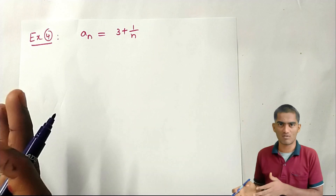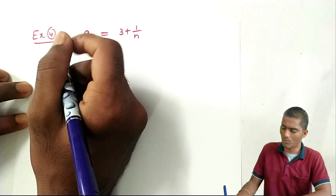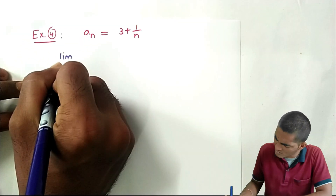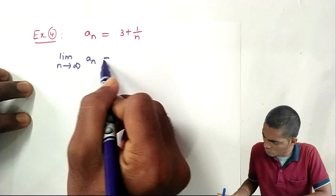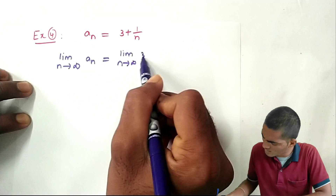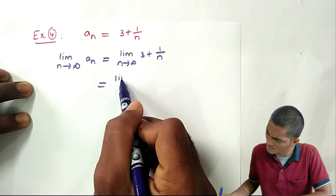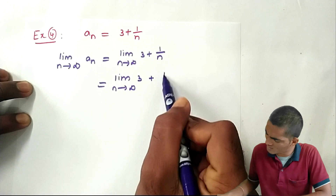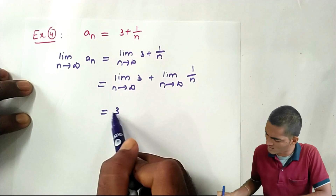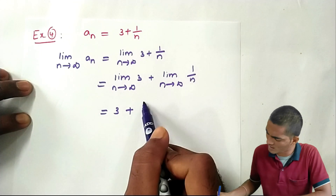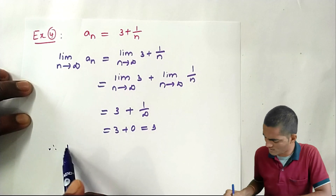Next, the nth term a_n = 3 + 1/n. Applying the limit: limit as n tends to infinity of (3 + 1/n). Applying the limit to both terms: limit of 3 plus limit of 1/n. Since 3 is constant, limit of 3 = 3, and 1/∞ = 0. So 3 + 0 = 3. Therefore the given sequence is convergent.